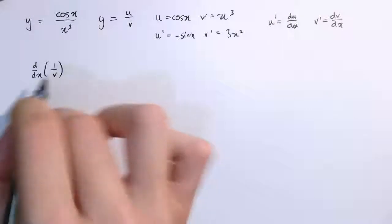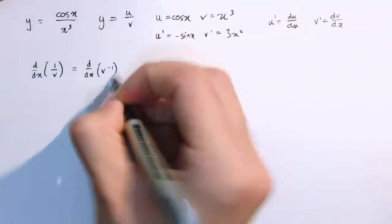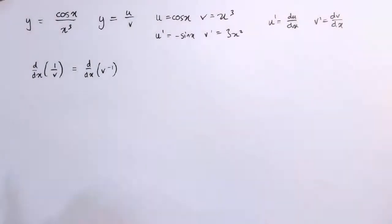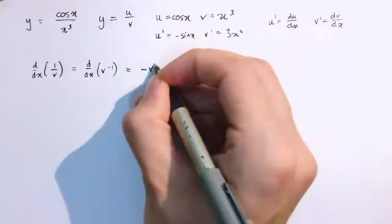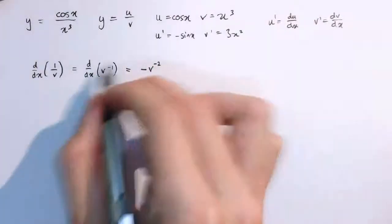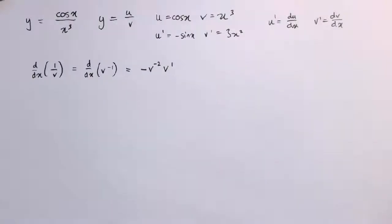Now this then is d by dx of v to the minus 1, your basic indices, 1 over v is v to the minus 1. And so by the chain rule, this gives us minus 1 times v to the minus 2 times the derivative of v, so times v dashed.